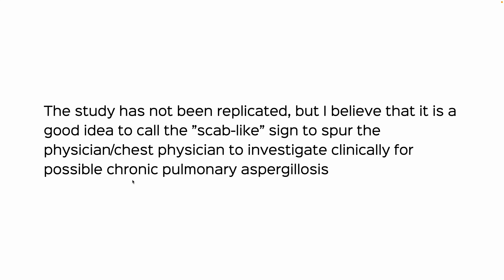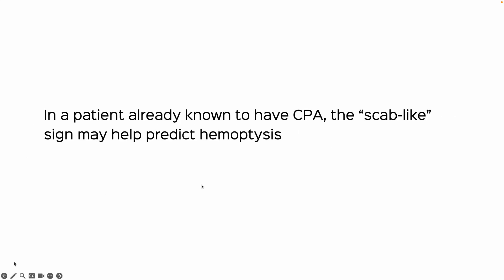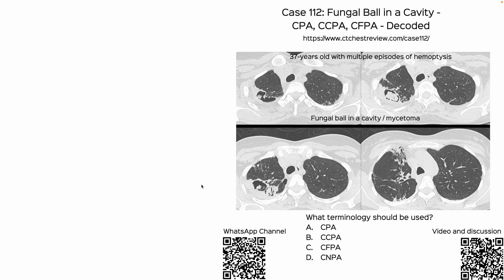I believe it's a good idea to look for these mural or wall lesions or excrescences and call the scab-like sign in the report, to spur the physicians to investigate clinically for possible chronic pulmonary aspergillosis. In patients already known to have CPA, this may help predict hemoptysis. I did a post on this at ctchestreview.com on Sunday, in case you're interested.